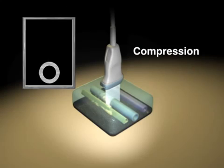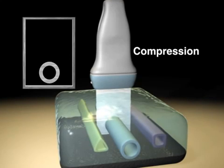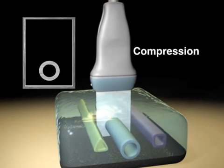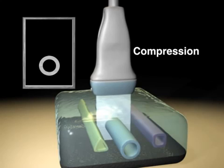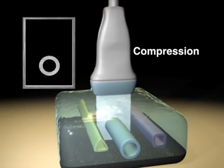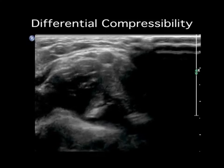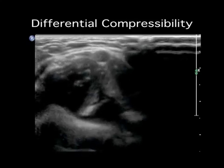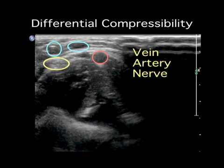Compression is a useful maneuver that has numerous effects. First, it moves the active face toward deeper structures to make them appear more superficial. It also helps differentiate between different structures by their relative compressibility. Veins are easy to compress, arteries are somewhat compressible and pulsatile, and nerves are fairly incompressible.